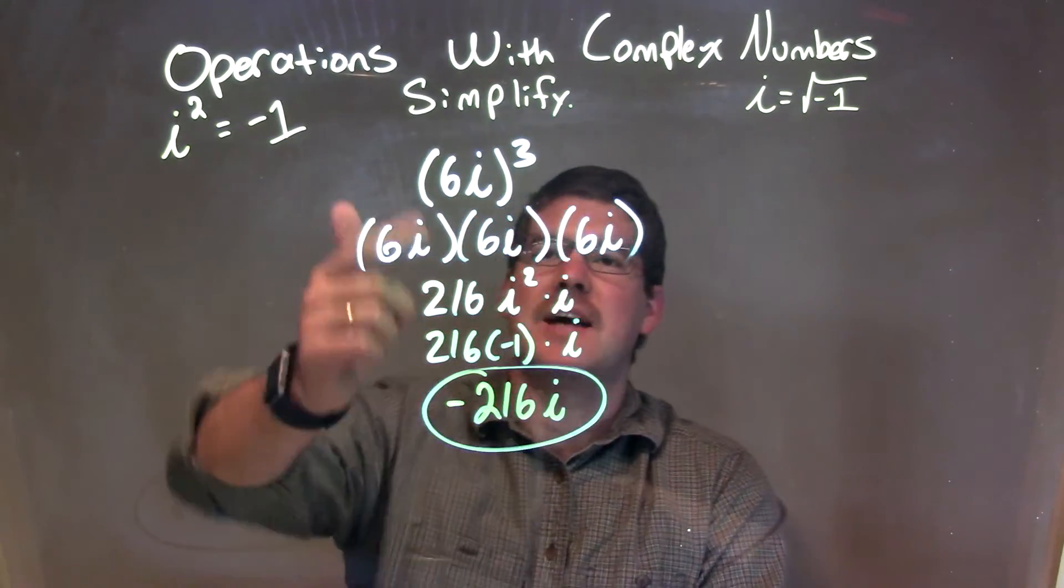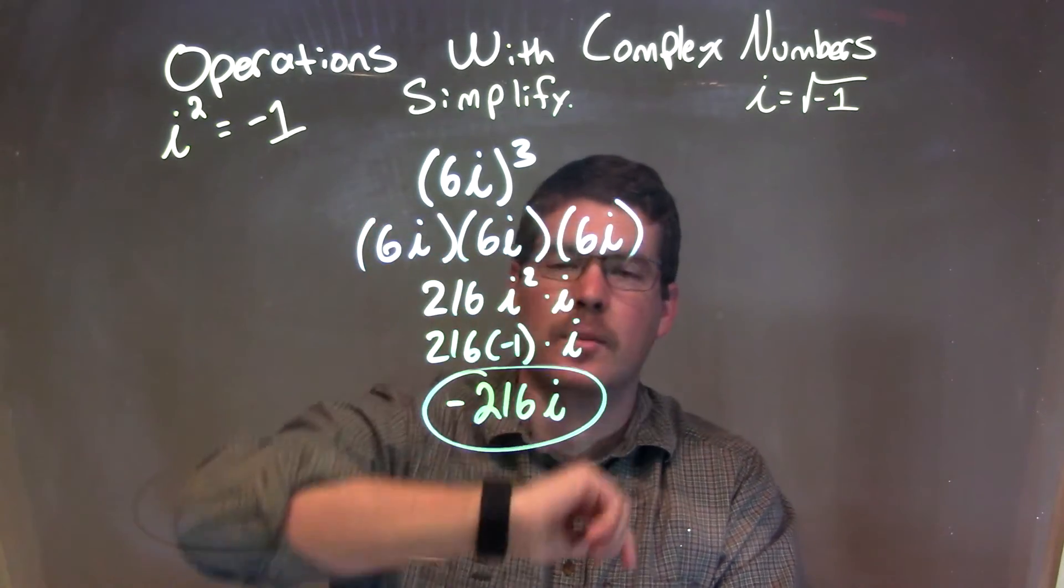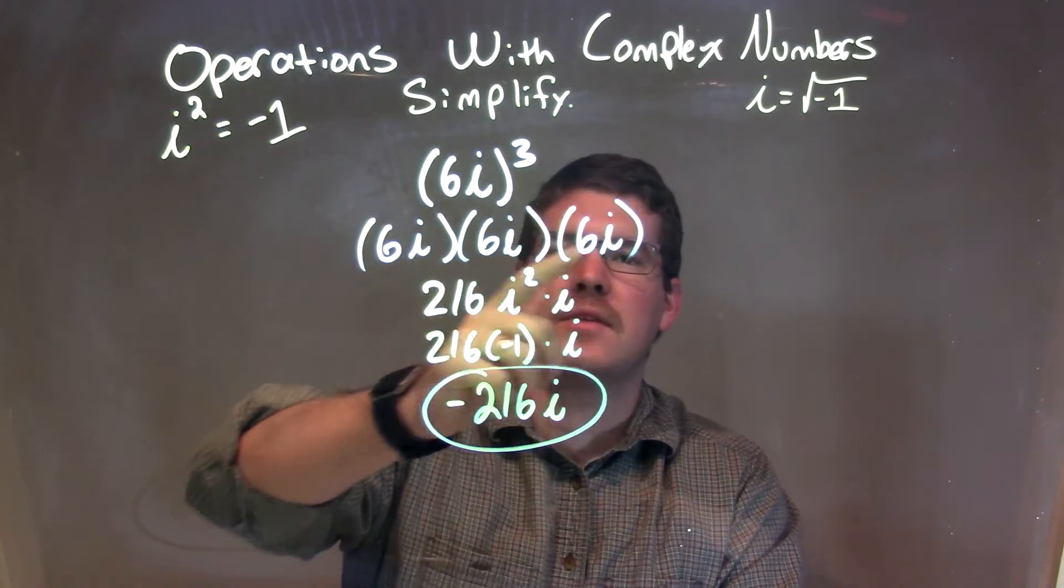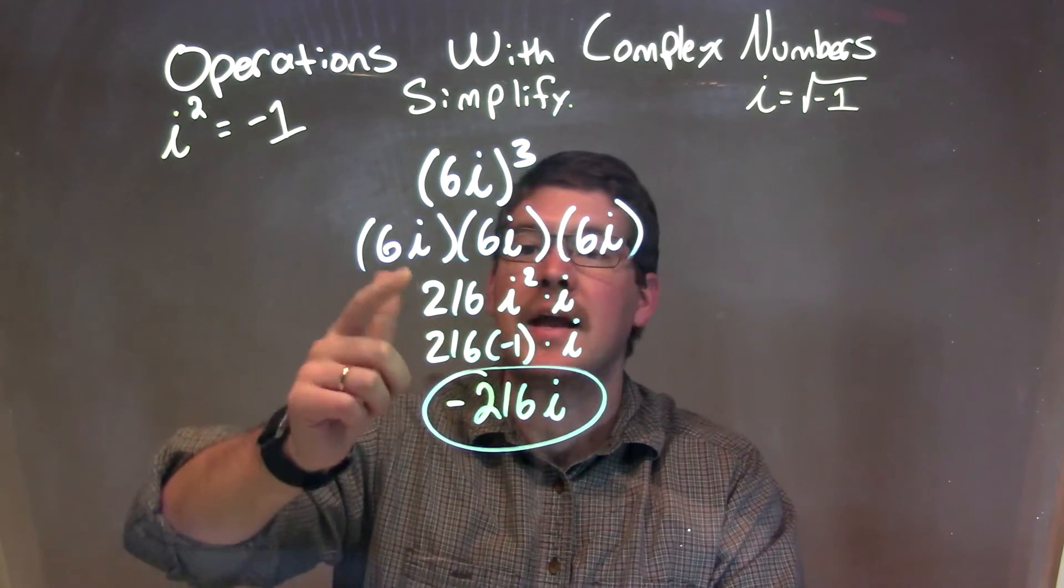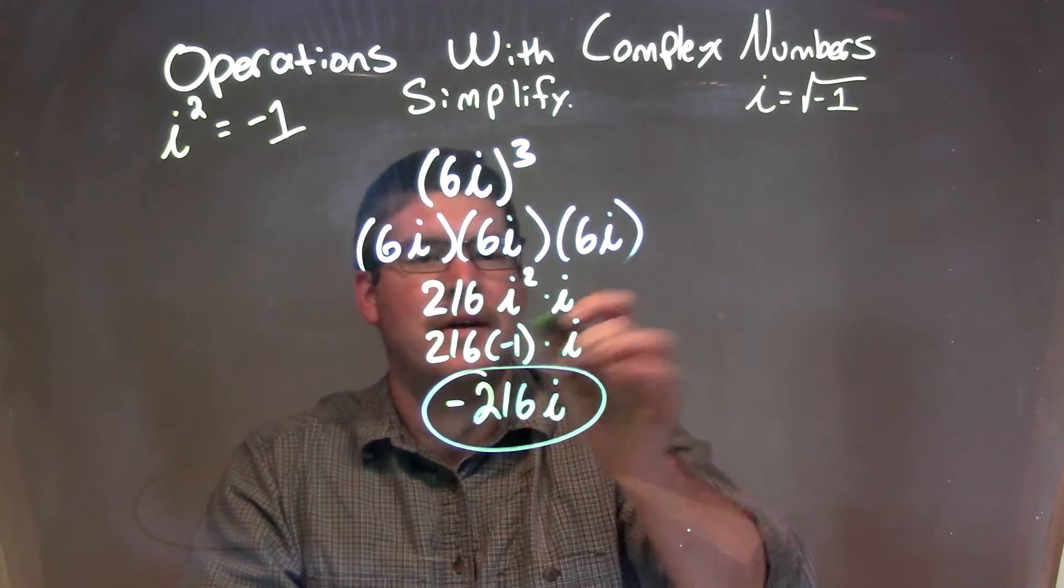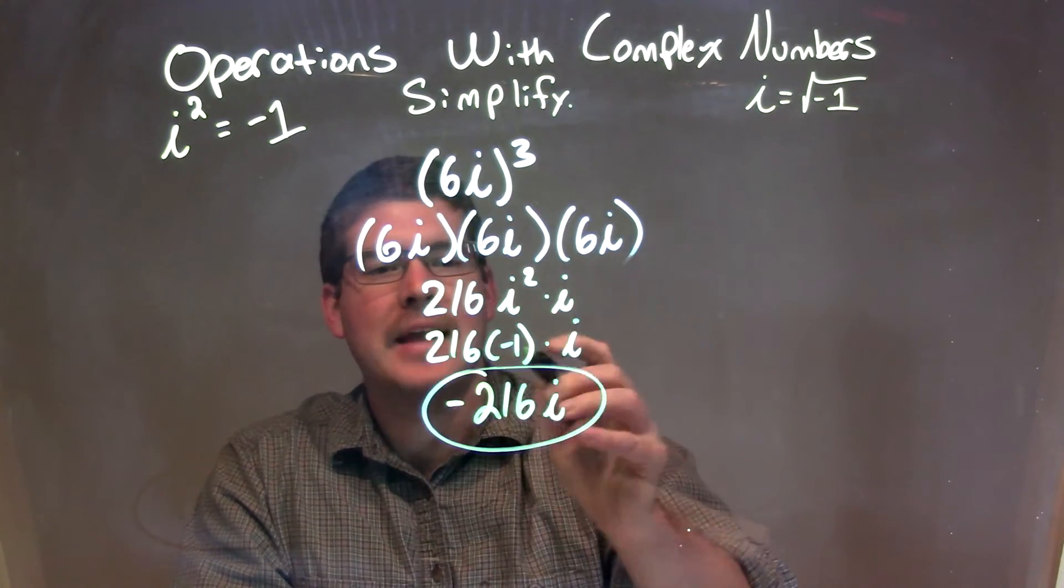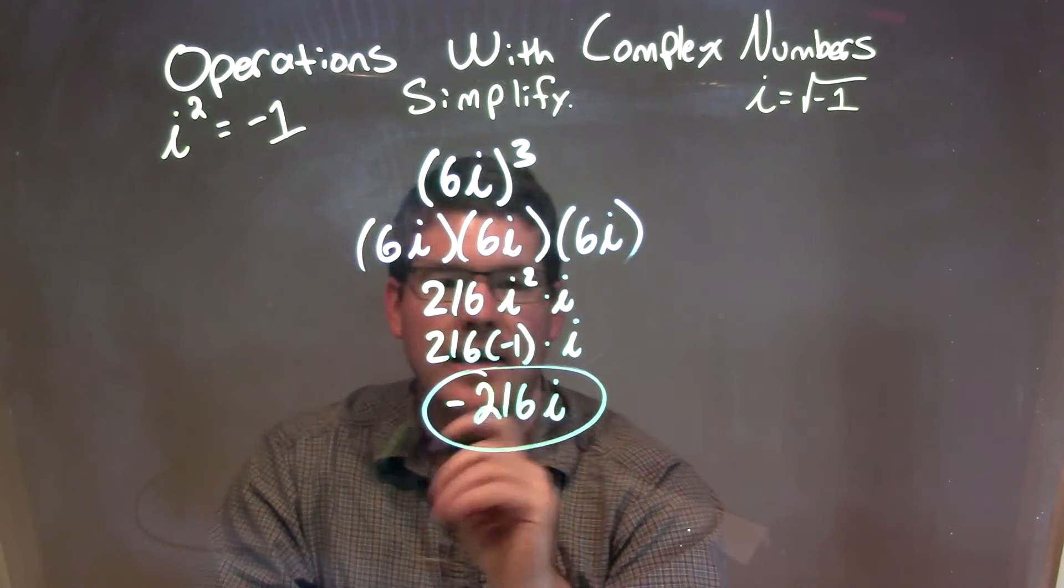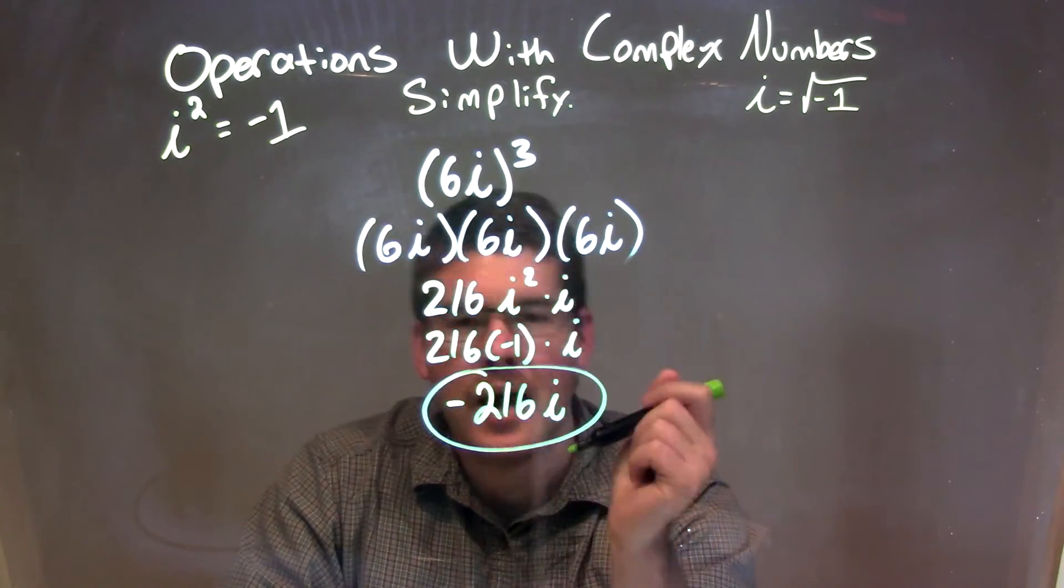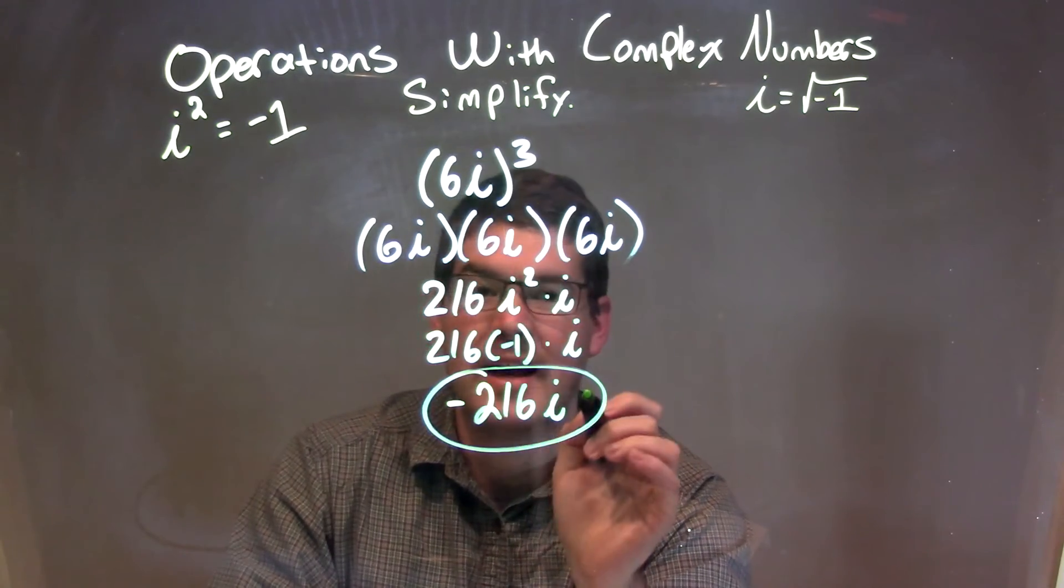So, let's recap. We're given 6i all to the third power. Well, we know that 6i times 6i times 6i, 6 times 6 times 6 is 216, and i times i times i is i to the third power, or i squared times i. We know i squared is negative 1, and negative 1 times 216 is negative 216. Brought down the i, giving me my final answer of negative 216i.